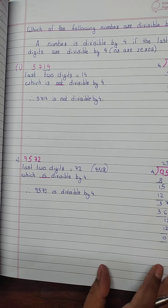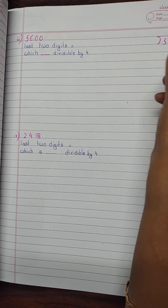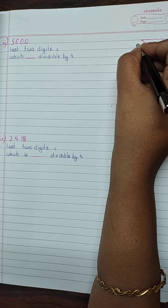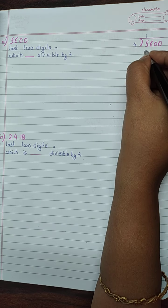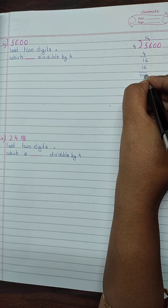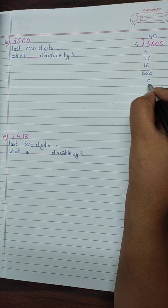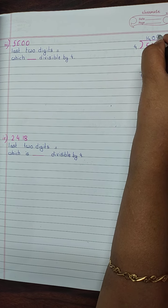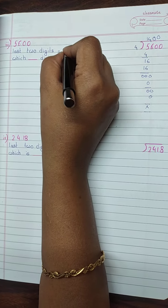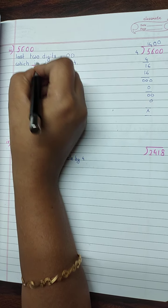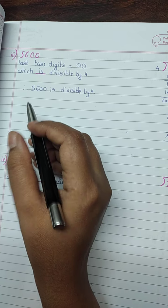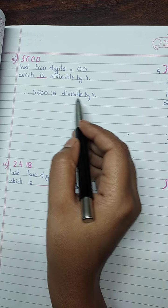Next is 5600. The last two digits are 00, which is divisible by 4. Therefore 5600 is divisible by 4.